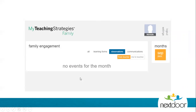If you click on Learning Forms, this will show you the different learning forms that your teacher has sent to you. If you click on the Observation tab, you will see the different observations that were sent — either from a teacher or from you to the teacher. The last tab is Communications.